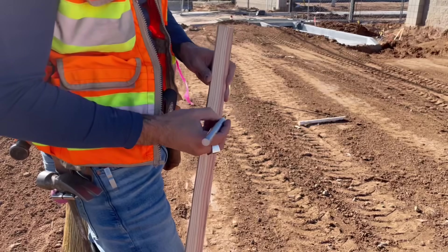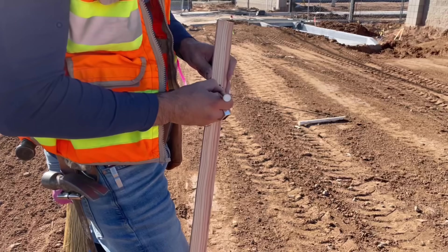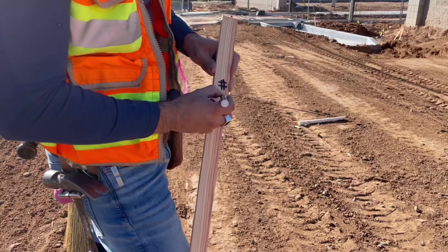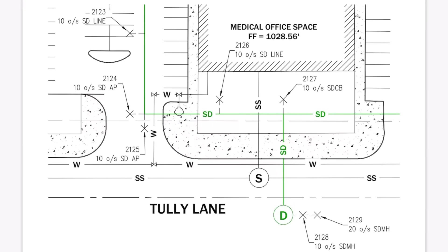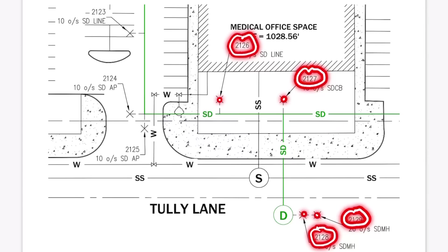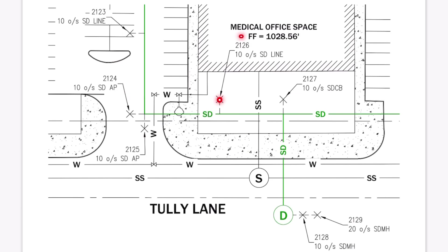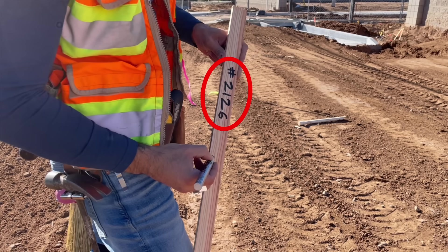How about the back of the lath? Often times you'll find a point number. This point number typically corresponds to the staking exhibit or staking map used to lay out the work. This exhibit can be left behind as a reference or guide to those performing the construction, so that if they're having trouble visualizing what's going on in the field, they can find their current location using the design drawing and reference the corresponding point number on a lath in the field.